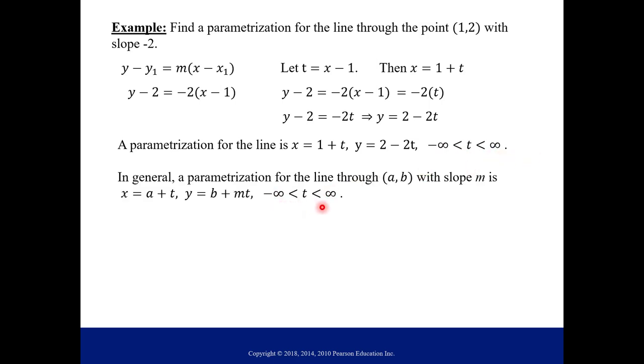Now in general, if you're asked to find the parameterization for a line through some point (a,b) and you know the slope is m, then in general you can use this setup, where x is just the x value a plus t, and then y is the y value b plus your slope times t. You can use this one in the future in general.